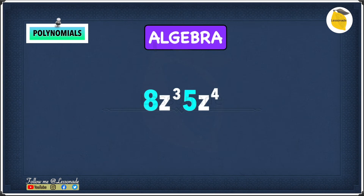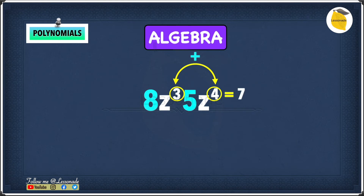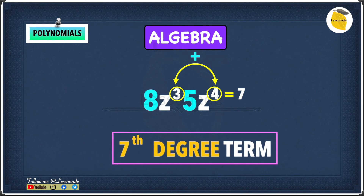Now consider 8z raised to the power of 3 times 5z to the power of 4. You may wonder: which power do we refer to for the degree — is it 3 or 4? In this case, you just add the two exponents: 3 plus 4 equals 7. So this is a 7th degree term. Whenever a term has more than one variable raised to a power, you add those exponents to find the degree of the term.